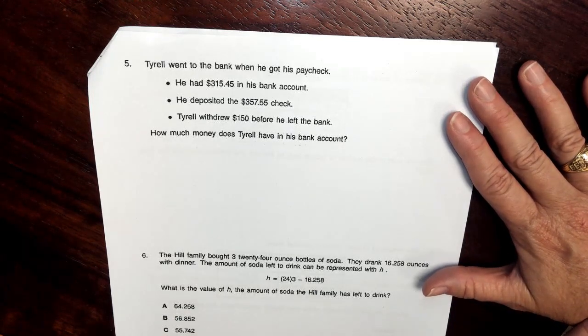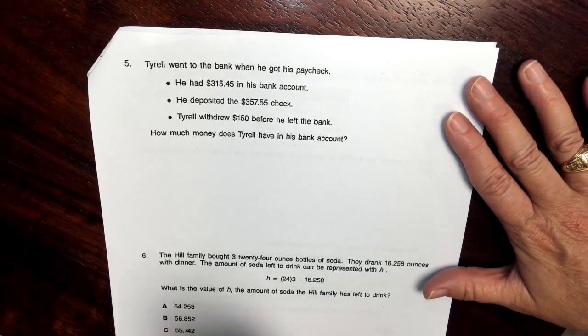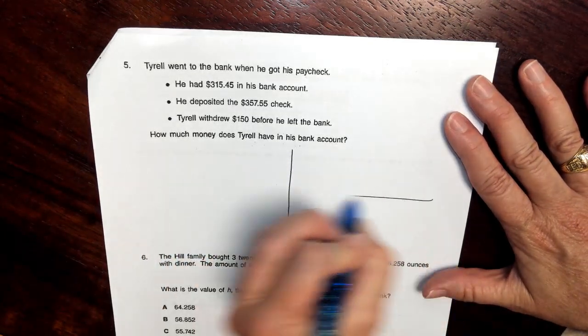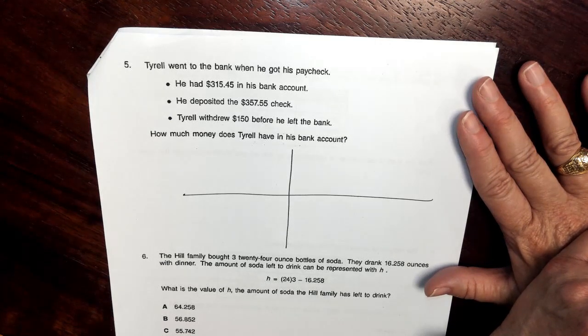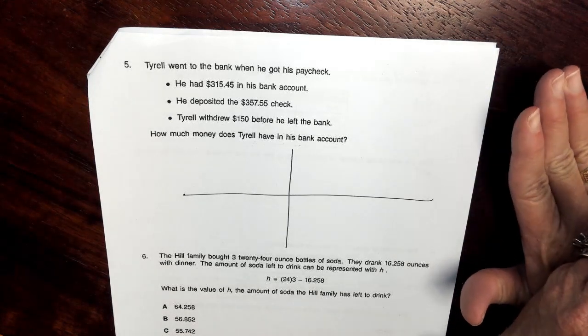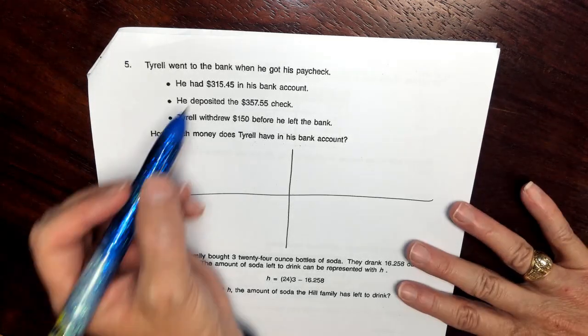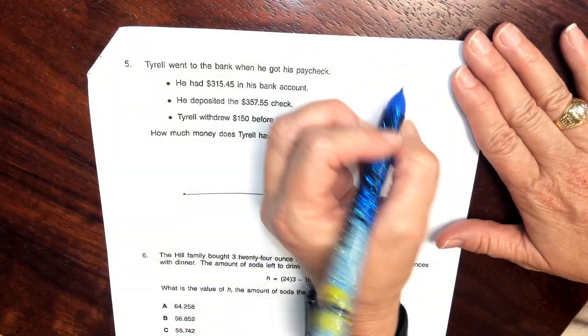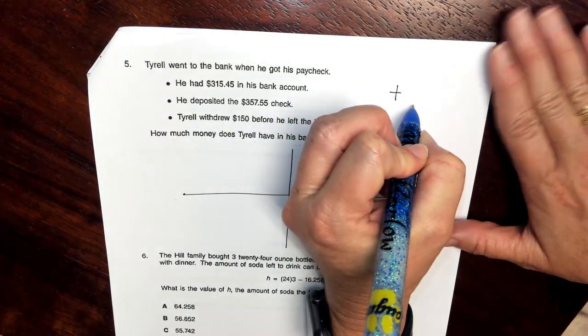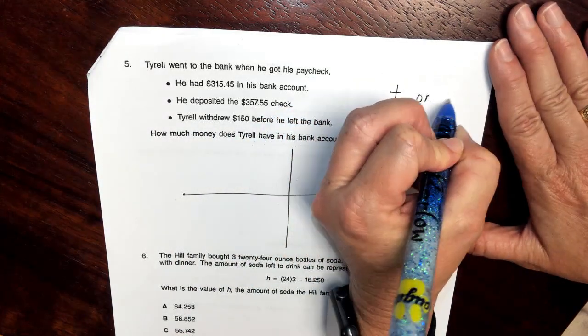So there's a lot going on with Terrell in this problem. The first thing I'm going to do is draw my windowpane. I'm going to reread and think about what's happening, what action is happening with each piece. The first thing that I notice is that none of these pieces are equal. So that tells me I'm either going to be adding to find some information or I'm going to be subtracting.